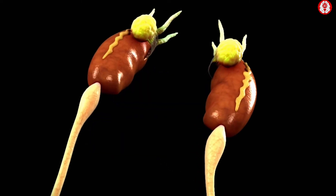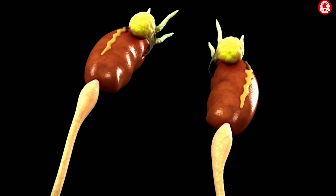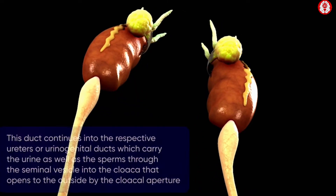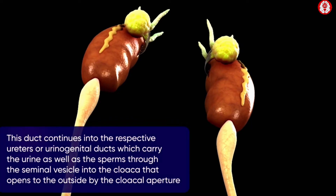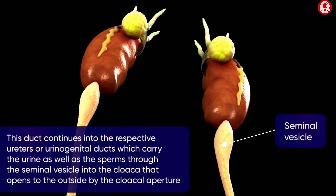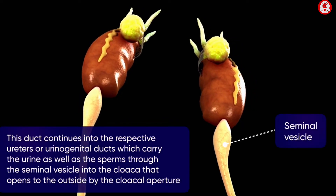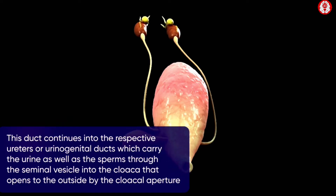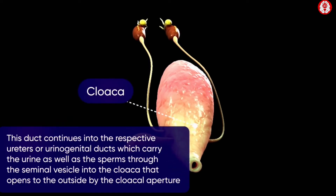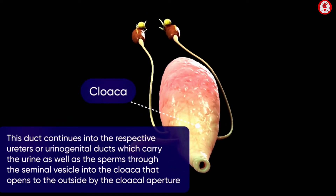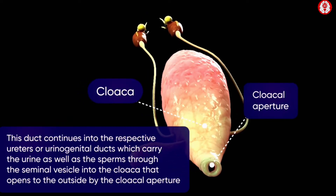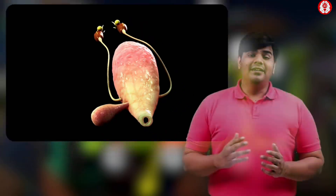Each urinogenital duct swells up immediately after coming out of the kidney to form a seminal vesicle that stores the sperms. The respective urinogenital ducts open into the cloaca, which finally opens to the outside through the cloacal aperture.